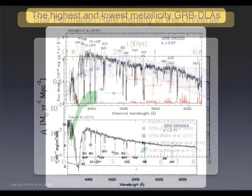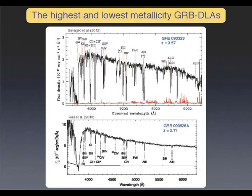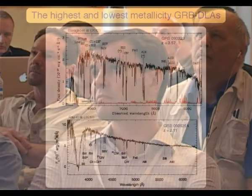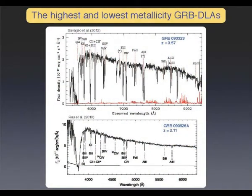About metallicity — this is for you. These are two different afterglow spectra, one at redshift 3.6 and one at redshift 2.1. The HI column density is about 10 times lower in one than the other, telling you how much gas there is in the galaxy. The metal lines here are much stronger than there — so the metal enrichment in the host galaxy is much higher in one object. This tells you that the idea that these objects are always metal-poor is not totally right, certainly not at high redshift.